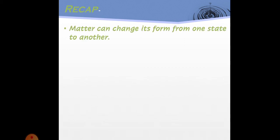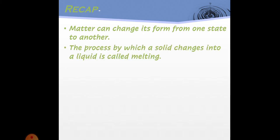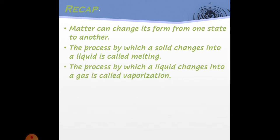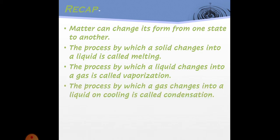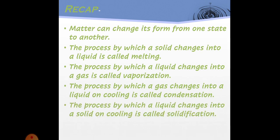Let's summarize what we have learned. Matter can change its form from one state to another. The process by which a solid changes into a liquid is called melting. The process by which a liquid changes into a gas is called vaporization. The process by which a gas changes into a liquid on cooling is called condensation. The process by which a liquid changes into a solid on cooling is called solidification.